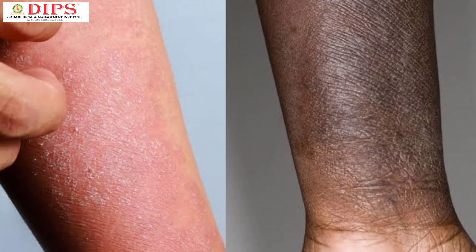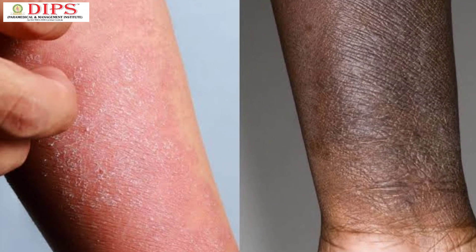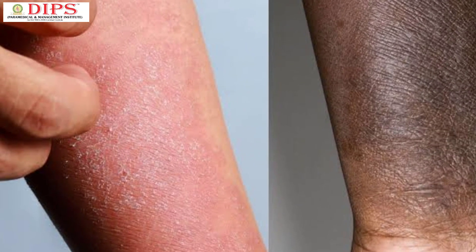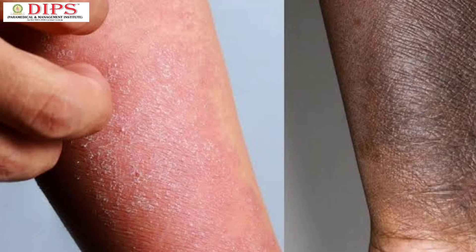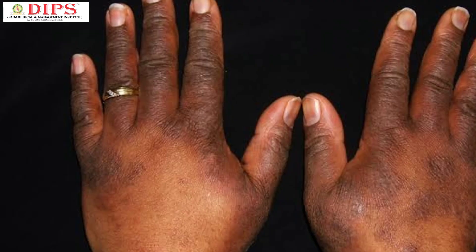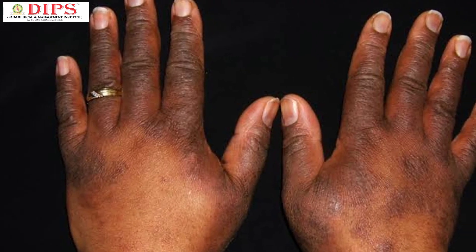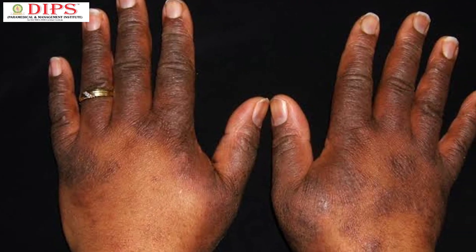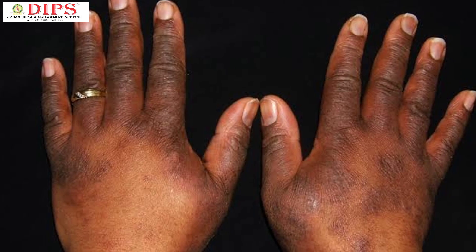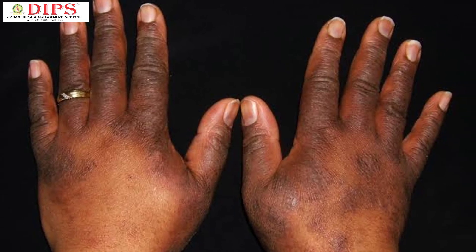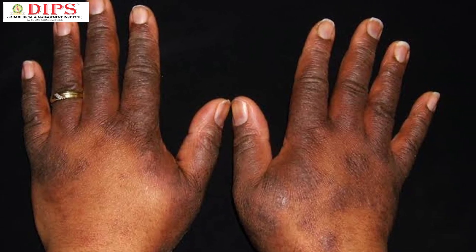In fair-skinned people, these areas may start out reddish and then turn brown. In darker-skinned people, eczema can affect skin pigmentation, making the affected area lighter or darker.